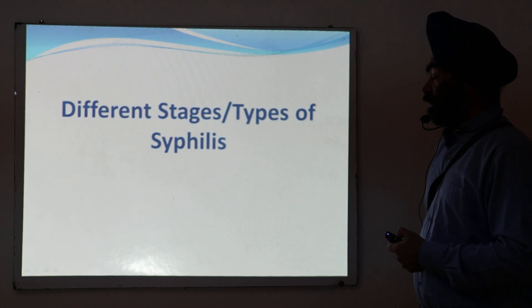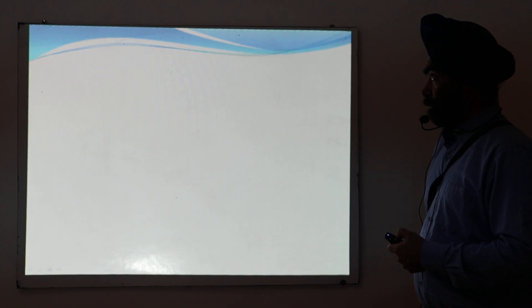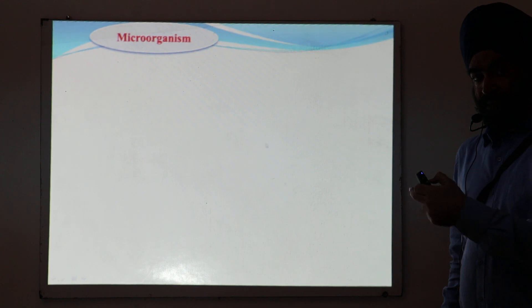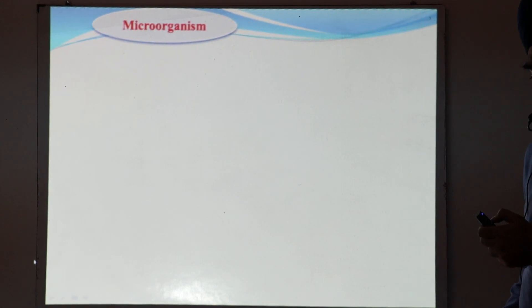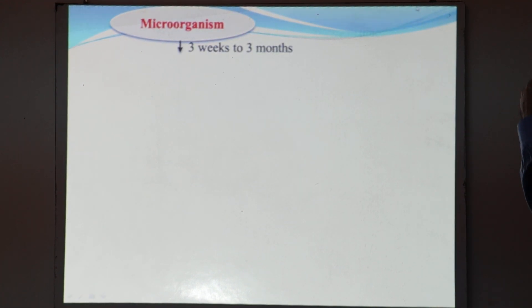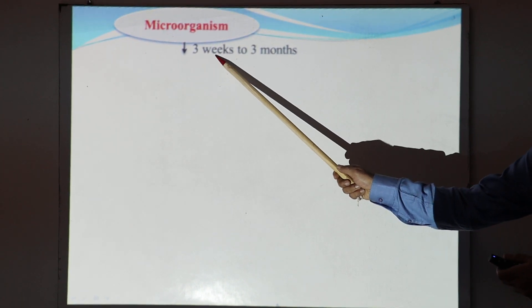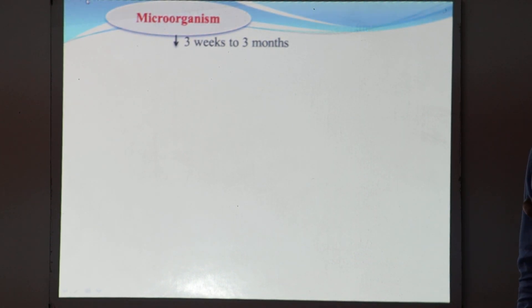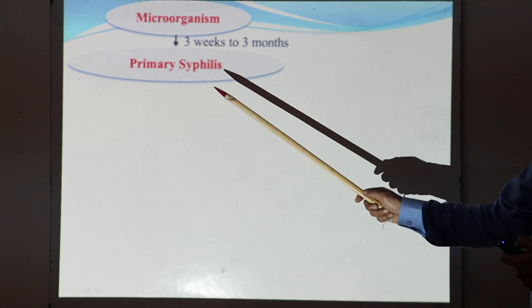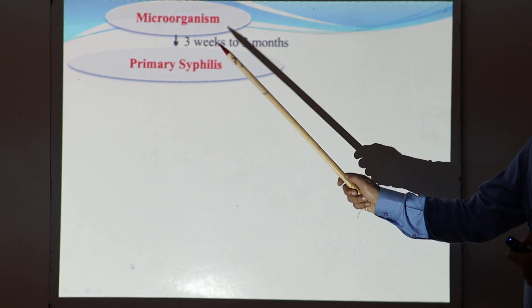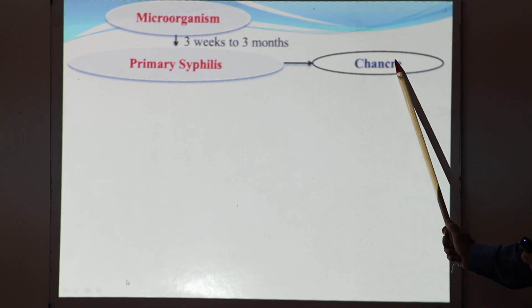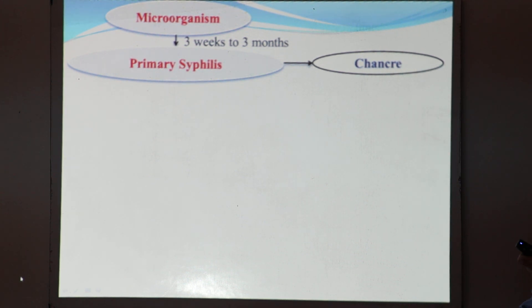Now, the different stages of syphilis. The microorganism enters the body and there is an incubation period of three weeks to three months — a very long incubation period between entry of the microorganism and appearance of symptoms. The first symptoms that appear are called primary syphilis, and the manifestation of primary syphilis is the chancre, which I will discuss in the next slide.